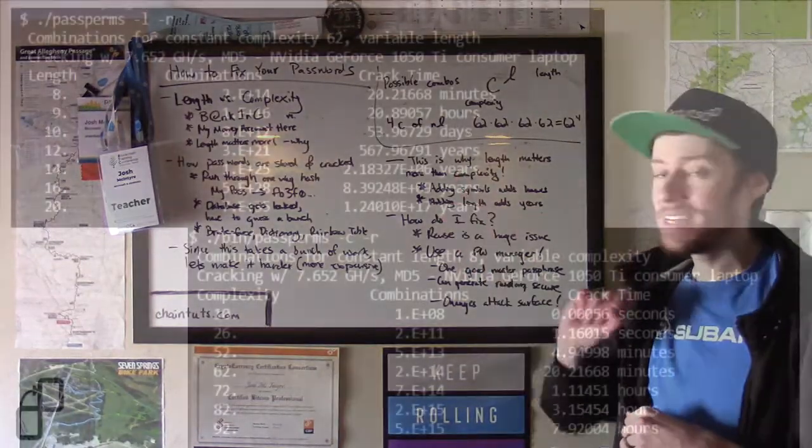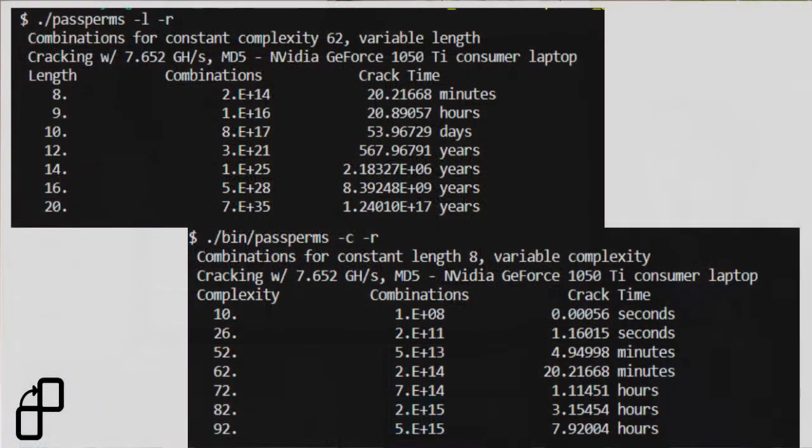And what this does is it shows the difference between adding additional complexity versus adding additional length. So if we take an eight character password, our passwords are always going to be eight characters. We can add a ton more symbols, we can go from just numbers,